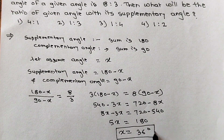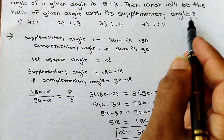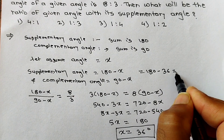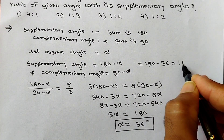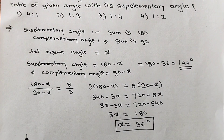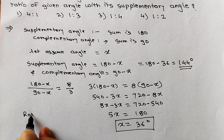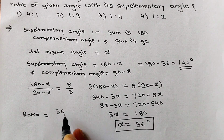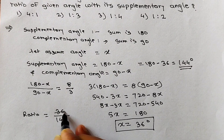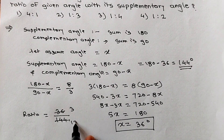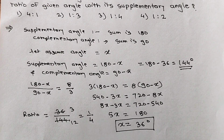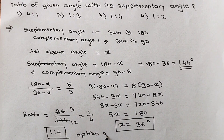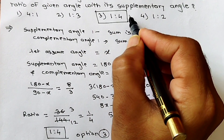What is asked is the ratio of this angle to its supplementary angle. The supplementary angle is 180 minus 36, which equals 144. The required ratio is 36 upon 144. Dividing both by 12, we get 3 upon 12, that is 1 upon 4. So the ratio is 1 is to 4, which is option 3 — our correct answer.